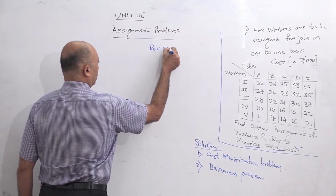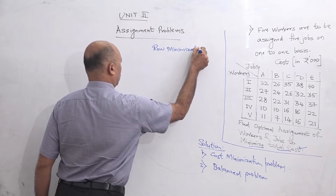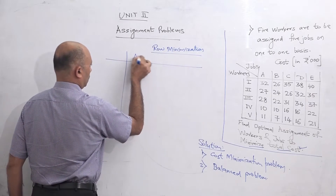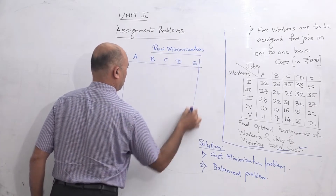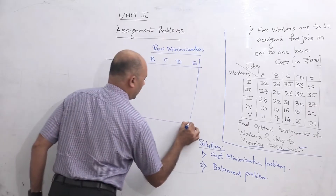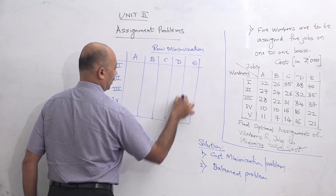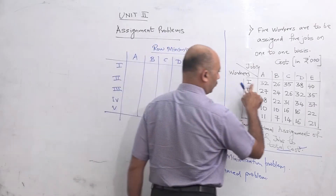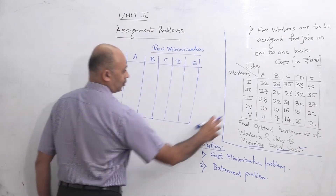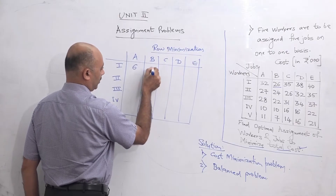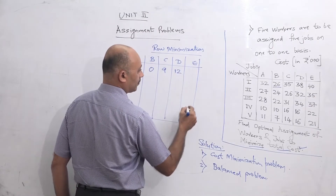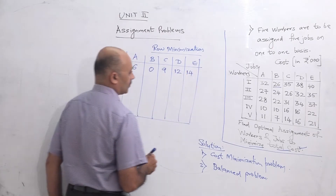The first step of assignment problem solution is called row minimization. In row minimization, we identify the minimum value in each row and subtract it from all values. The first row minimum value is 26, so we subtract 26 from all values: 32−26=6, 26−26=0, 35−26=9, 38−26=12, 40−26=14. Second row minimum value is 24, so we subtract 24 from all values.